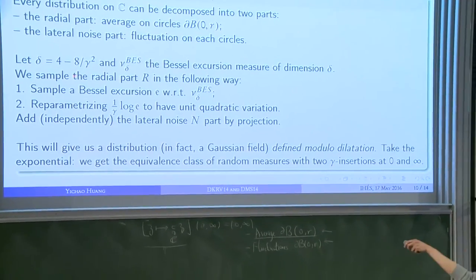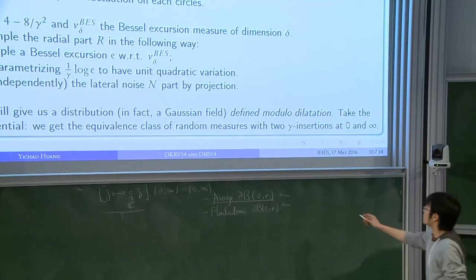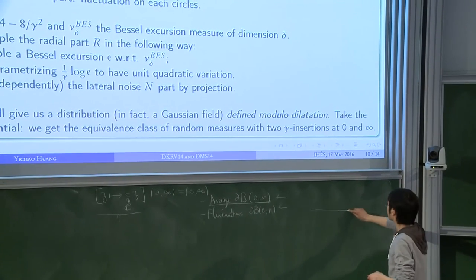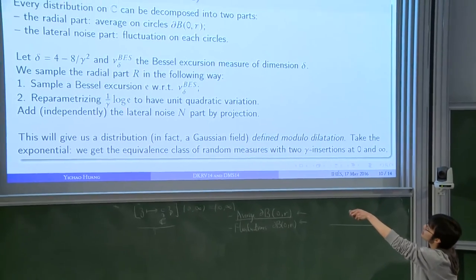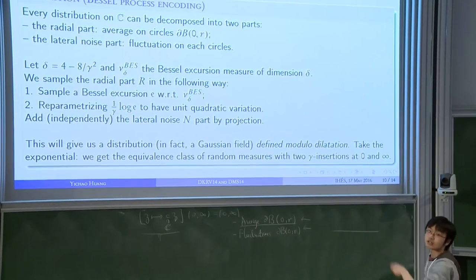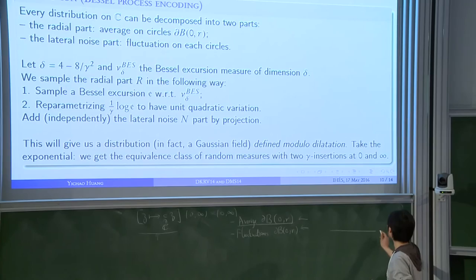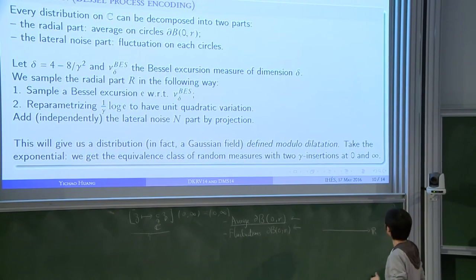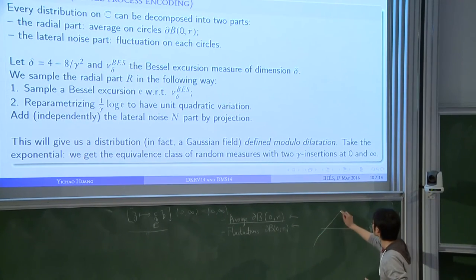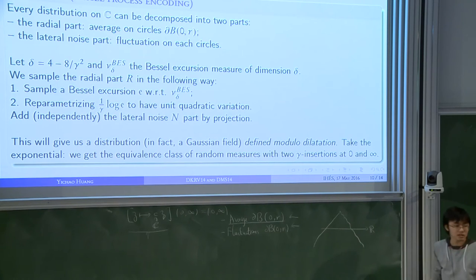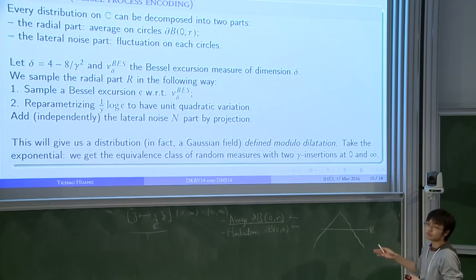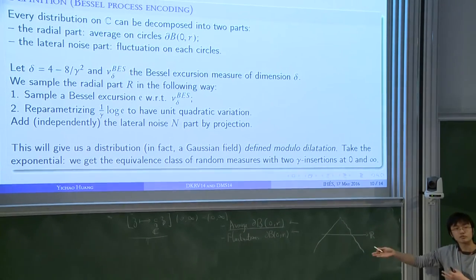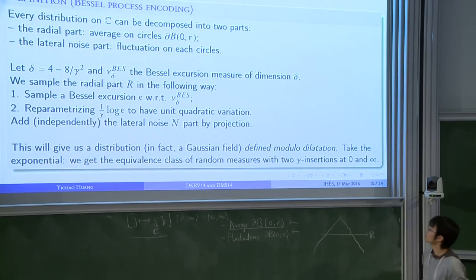We will see why the construction is invariant under this action. So what you do—this is a little bit hard to read perhaps at first view—but when you select a Bessel excursion and you take a log of this Bessel excursion, it will look like something like this, on R. It will look like something that we call the two-sided drifted Brownian motion. It will look like a Brownian motion but with one drift here and one drift here.